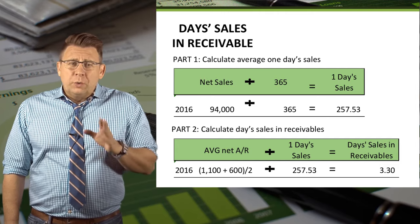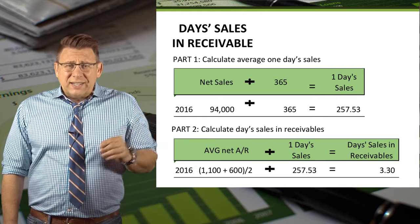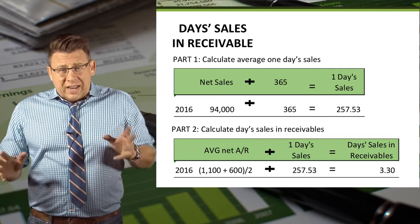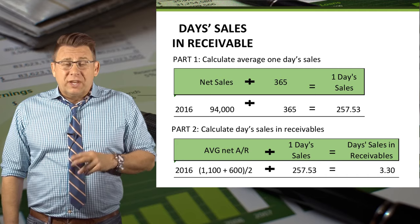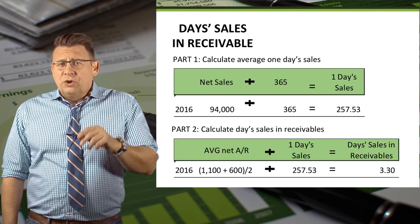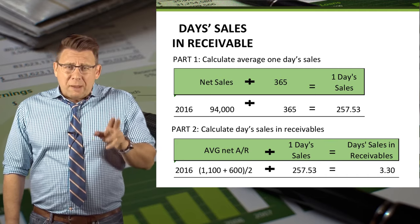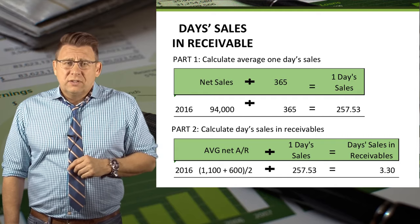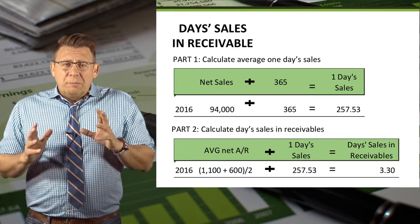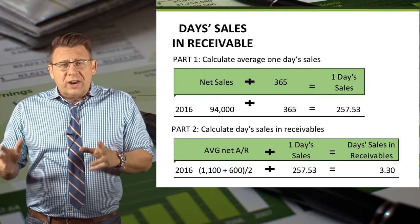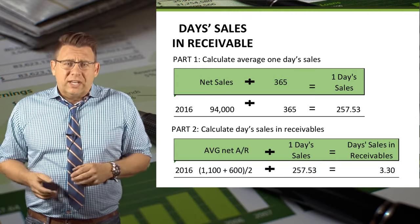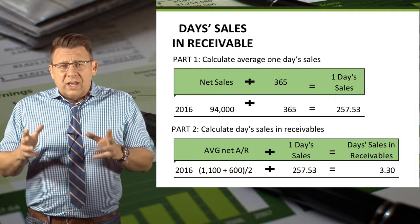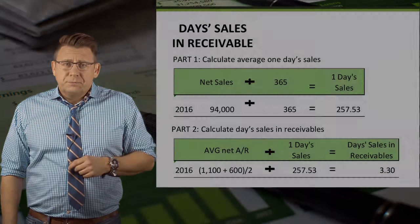In part two we divide the net AR by the one day sales to get 3.3 days. On average we collect our accounts receivable every 3.3 days, which is a little too good to be true. This is probably a business that has a lot of cash sales rather than sales on account. Regardless, we would look to compare the results to our credit terms — let's say 30 days — and see if the company is doing better or worse at collecting than terms.